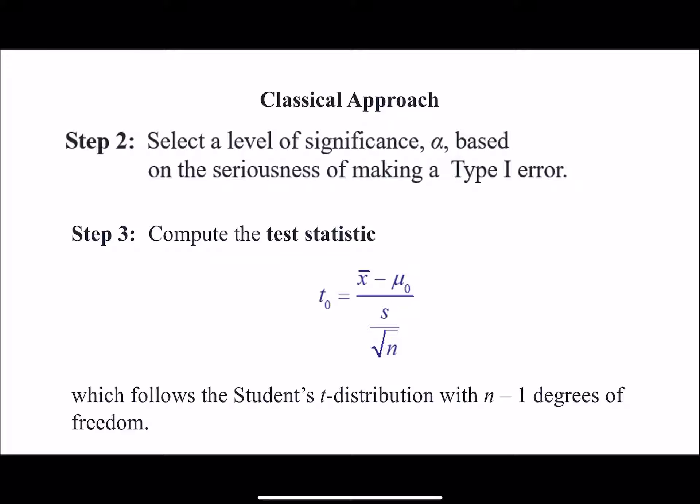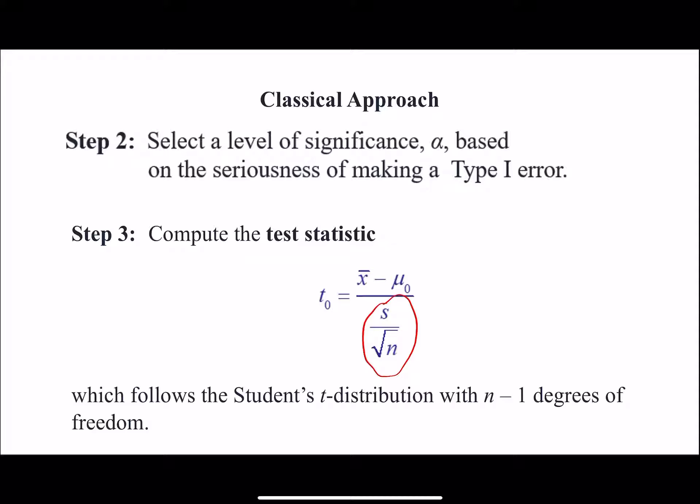Next we need to compute our test statistic - you do x-bar minus mu over the standard error, which is s divided by the square root of n. We're going to be looking at the t-distribution with n minus 1 degrees of freedom. If this doesn't make complete sense yet, that's okay - we're going to do some math and it usually makes more sense once we work through it.